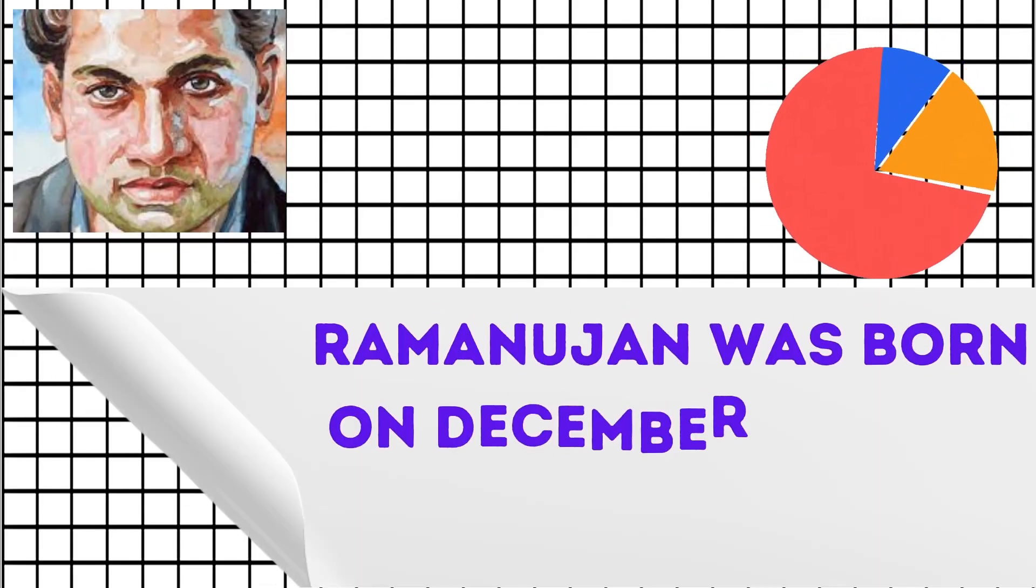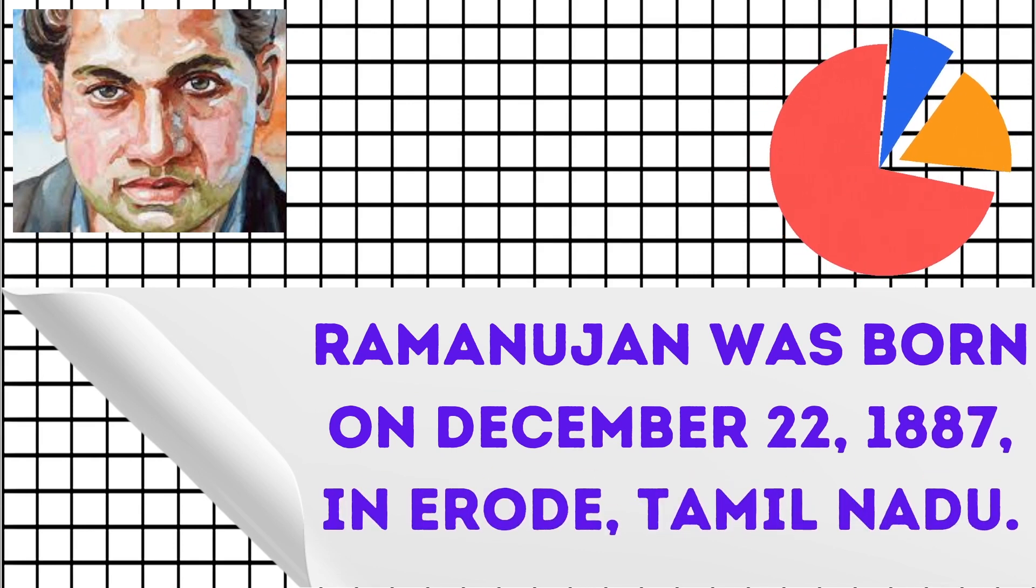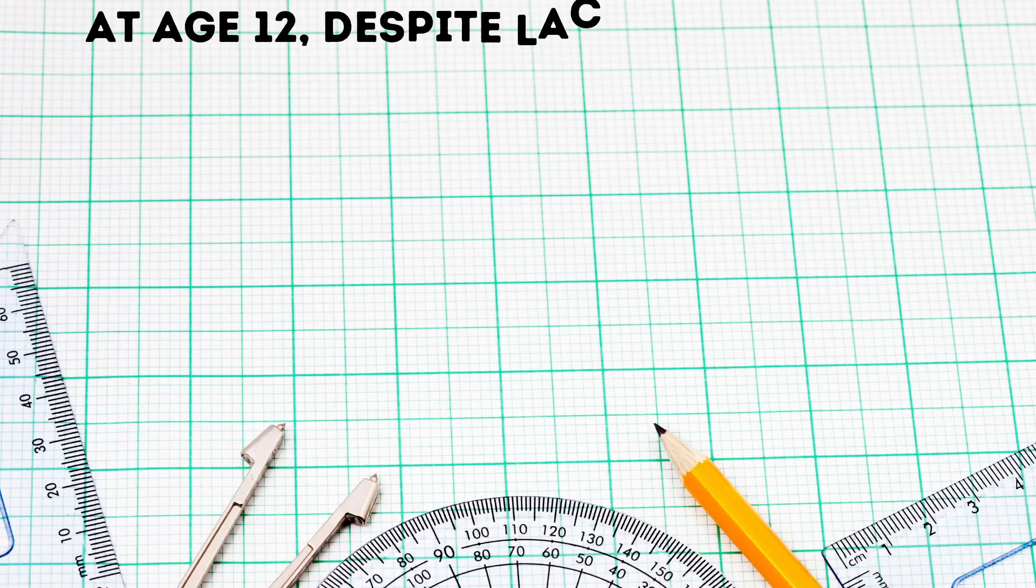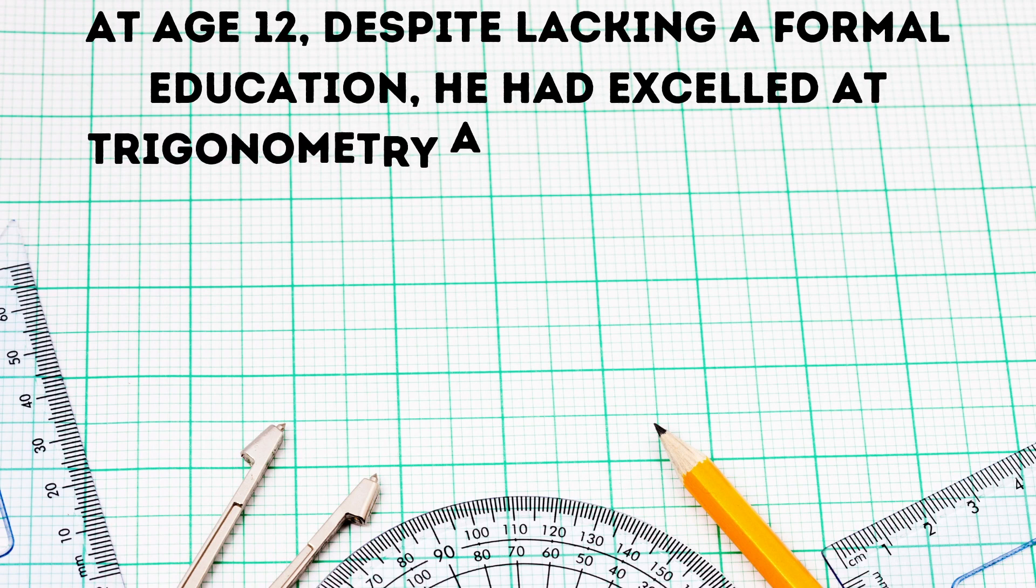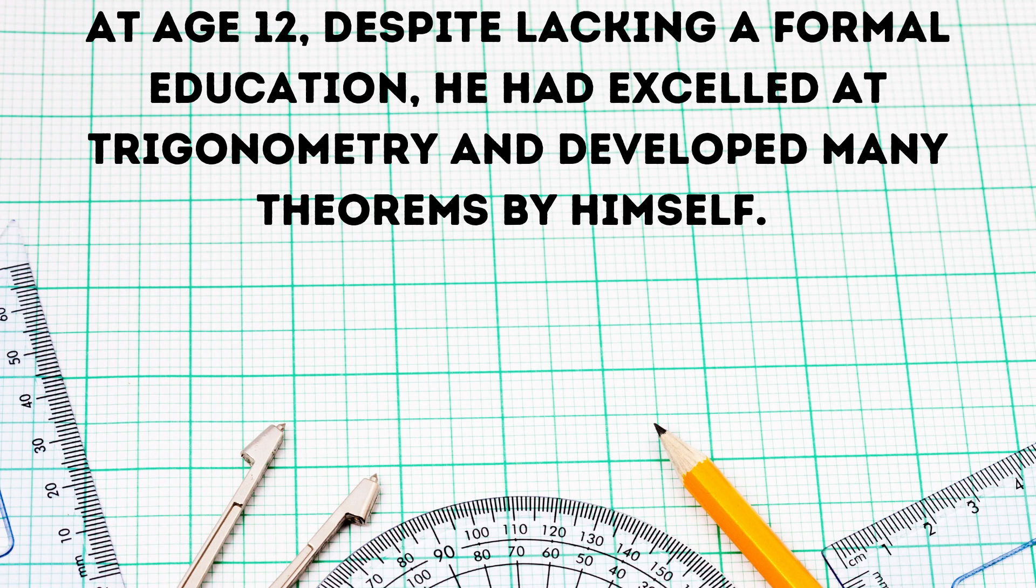Ramanujan was born on December 22, 1887 in Erode, Tamil Nadu. At age 12, despite lacking a formal education, he had excelled at trigonometry and developed many theorems by himself.